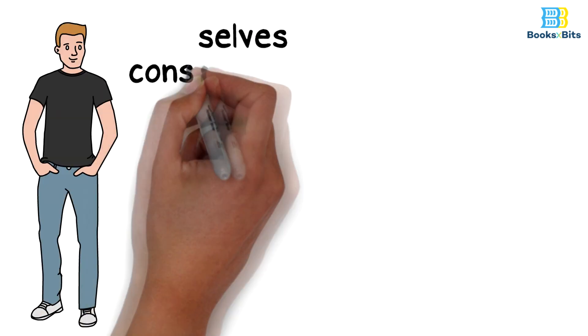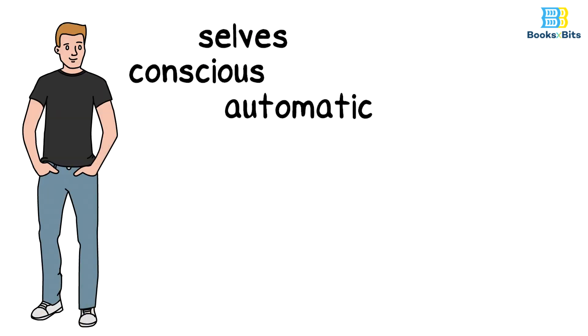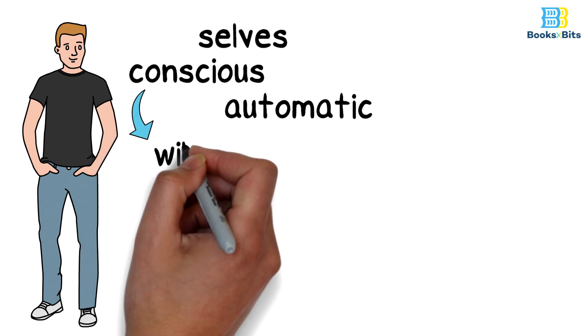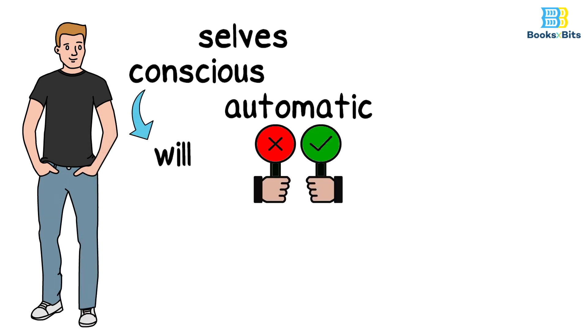There are two selves: a conscious self and an automatic self. The conscious self is the will and it is the decision maker, and it pushes the whole body to respond to those decisions.